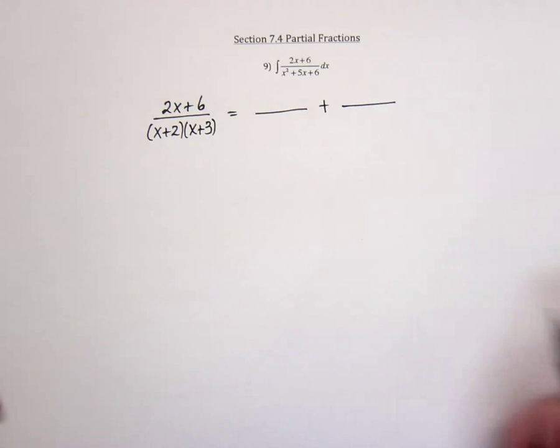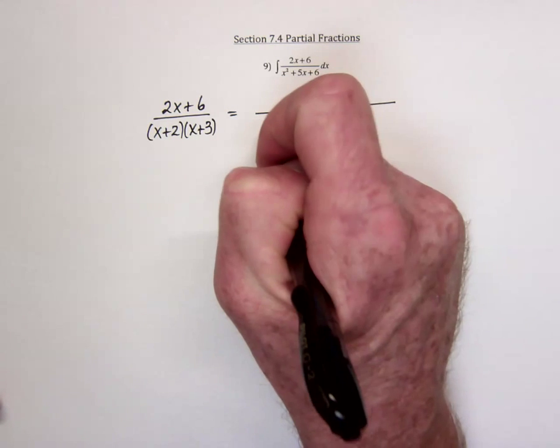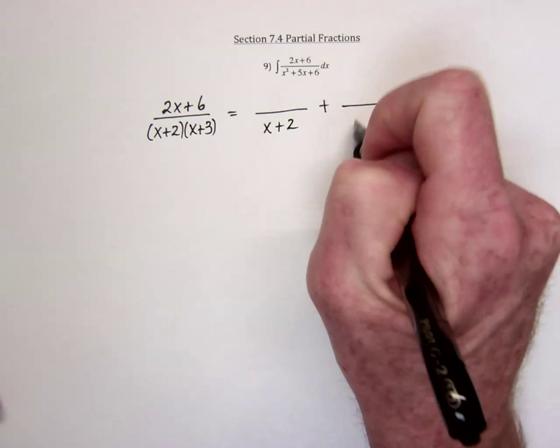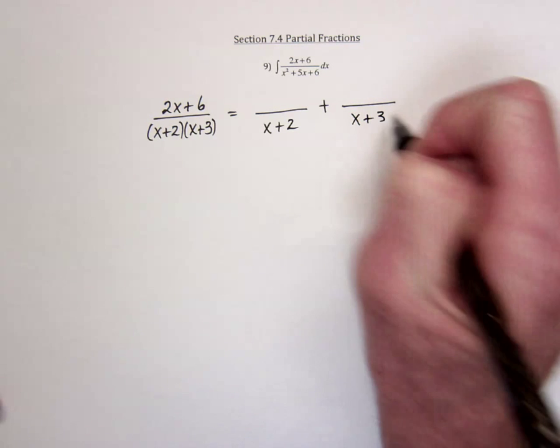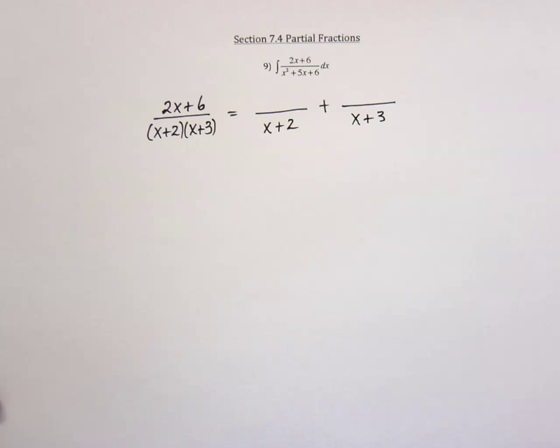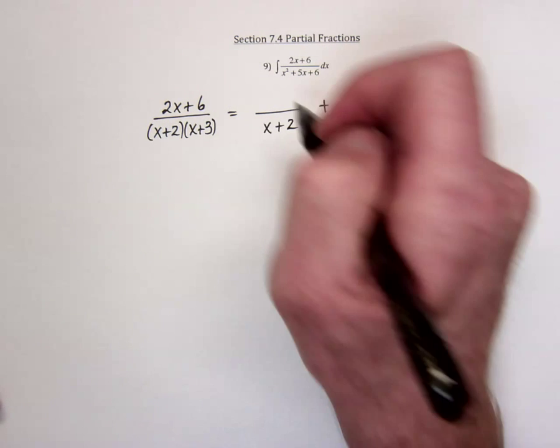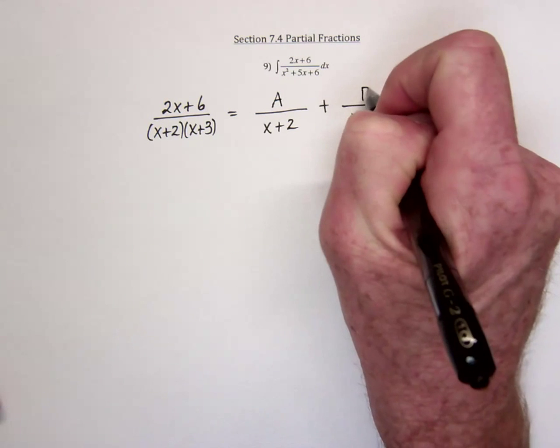That means that the original problem can be rewritten as 2 fractions. One with x plus 2 as the denominator. One with x plus 3 as the denominator. The numerators will be some numbers. For now, I'll call them A and B.